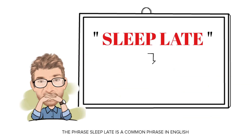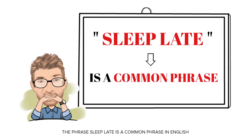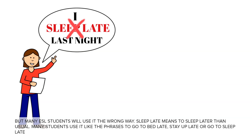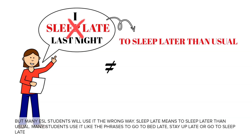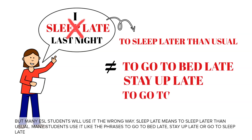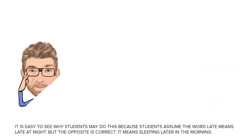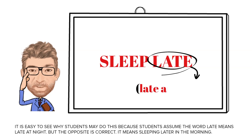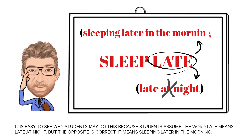The phrase 'sleep late' is a common phrase in English, but many ESL students use it the wrong way. 'Sleep late' means to sleep later than usual. Many students use it like the phrases 'to go to bed late,' 'stay up late,' or 'go to sleep late.' It is easy to see why students may do this, because they assume the word 'late' means late at night. But the opposite is correct — it means sleeping later in the morning.